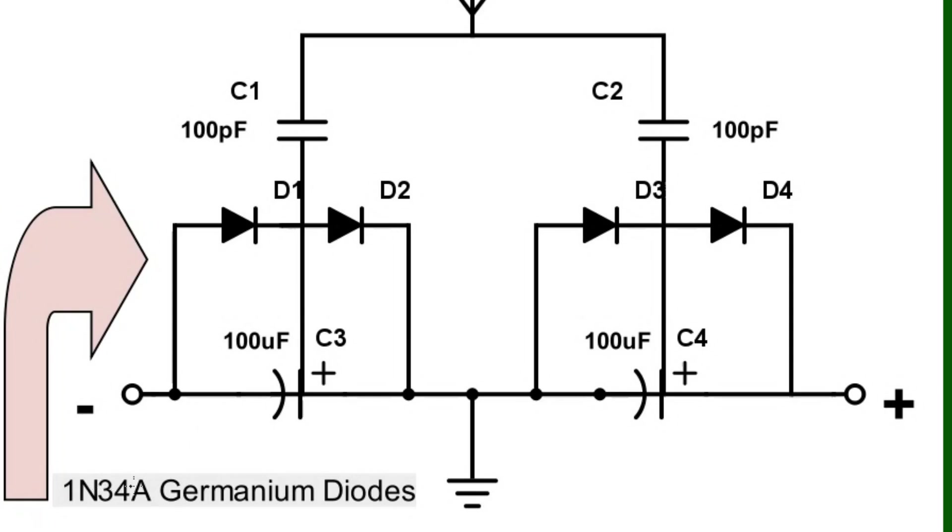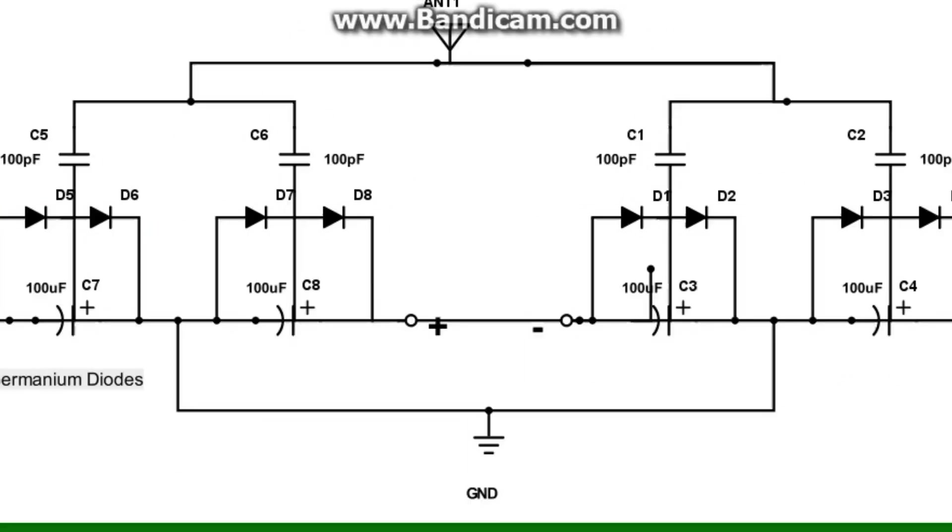And then you get your plus and your minus out. And this arrow here is just showing that they're 1N34A germanium diodes. Alright. And here we have the second circuit which is basically just two of those circuits wired in series down here. You can see plus and minus connected together. You've got your antenna and your ground.